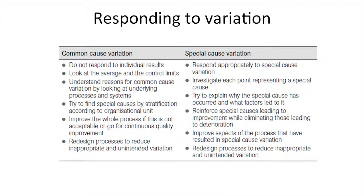A strategy for correctly responding to special causes calls for investigation and explanation, and will sometimes lead to specific changes depending on the special cause identified. Common cause variation requires a different approach: firstly, explore the variation more closely using stratification to reveal any special causes; next, seek to understand variation through the processes and systems that cause a problem; and finally, redesign processes to reduce inappropriate and unintended variation in an agreed measure, in a way that's responsive to patients' needs.